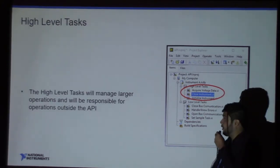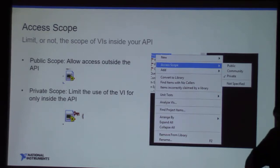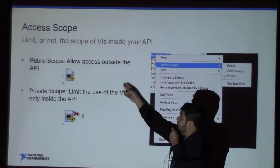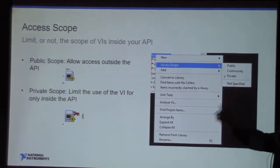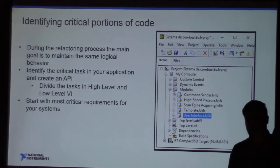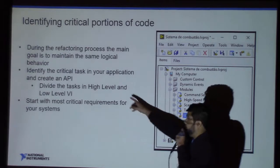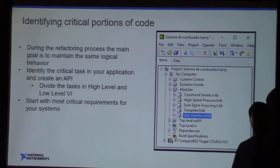Here are the high-level tasks that manage large operations inside the API. But how can you decide what your developer will or will not see? That's easy — you change the access scope inside the API. A public scope will allow access outside the API; a private scope will limit the use of the API. First, identify critical logical behaviors inside your code, then divide them into low and high level tasks. Always start with the most critical requirements for your system.